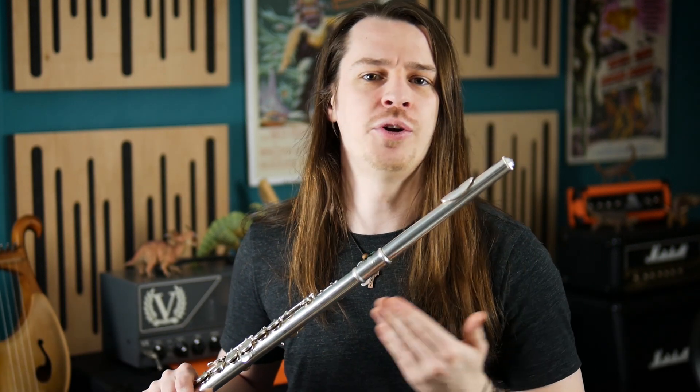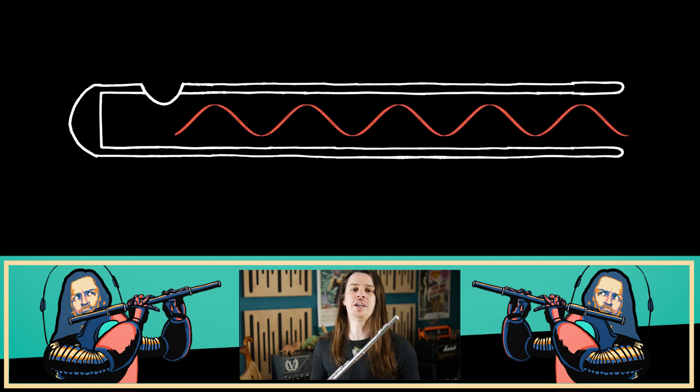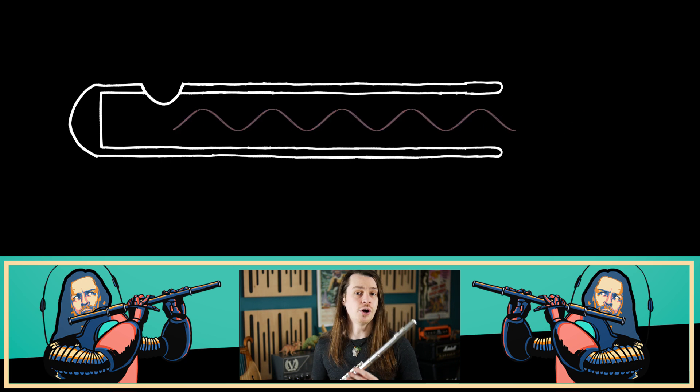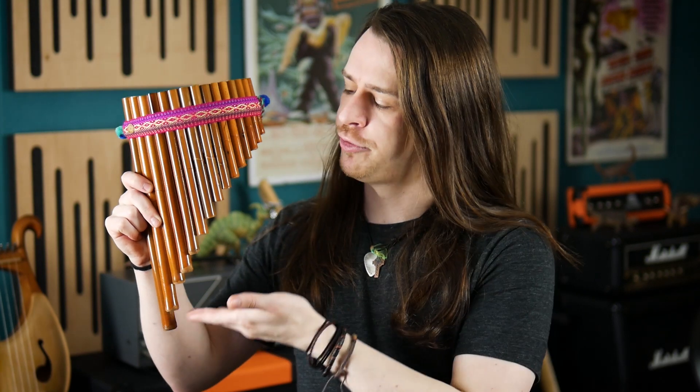The oscillating air stream within the flute sets up a standing wave, causing resonance at a frequency dictated by the length of the air column. Longer tubes produce lower notes, and shorter tubes produce higher notes. This can be most effectively demonstrated using panpipes, which use multiple fixed length tubes to achieve a range of notes.